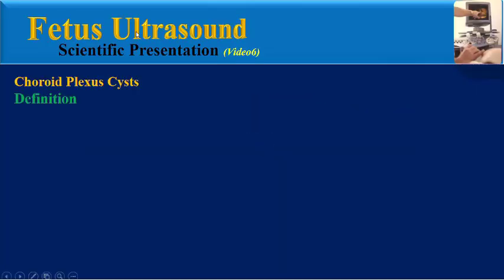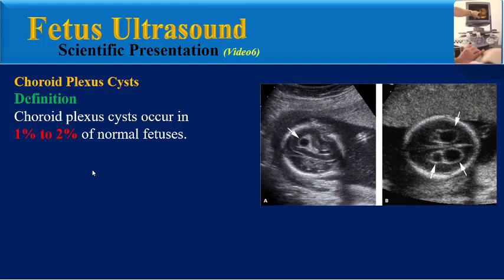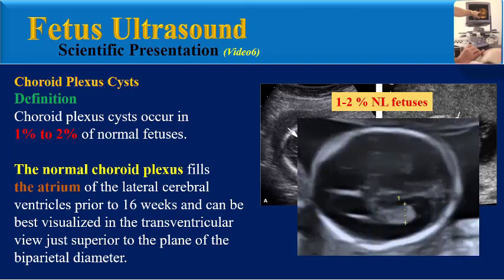What is the definition of the choroid plexus cysts? Choroid plexus cysts occur in 1 to 2% of normal fetuses. The normal choroid plexus fills the atrium of the lateral cerebral ventricles prior to 16 weeks and can be best visualized in the transventricular view just superior to the plane of the biparietal diameter.